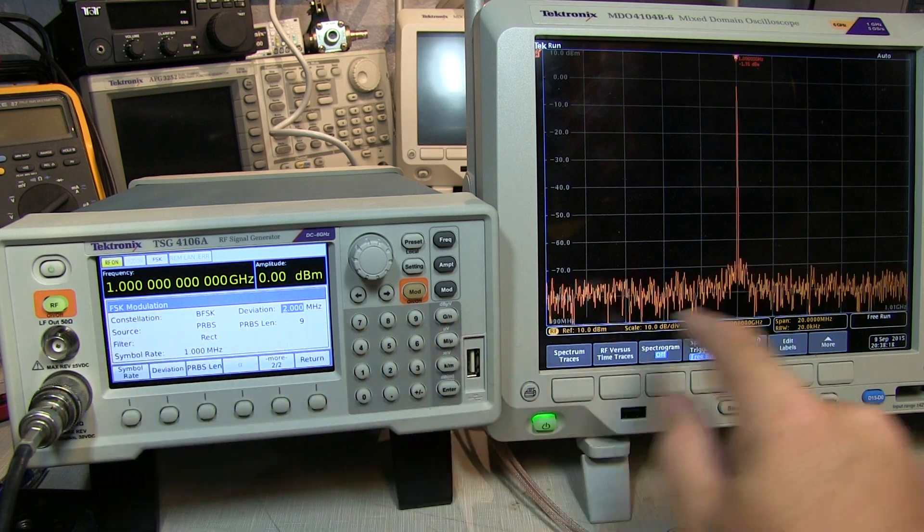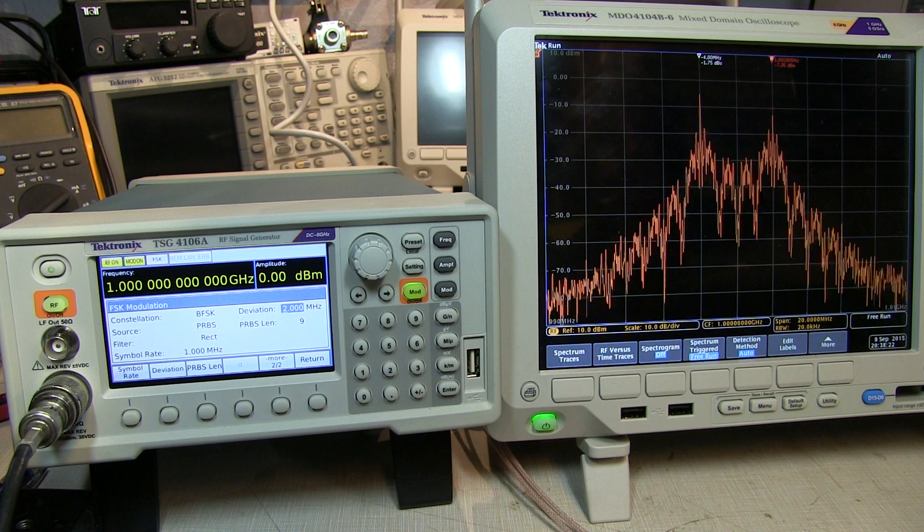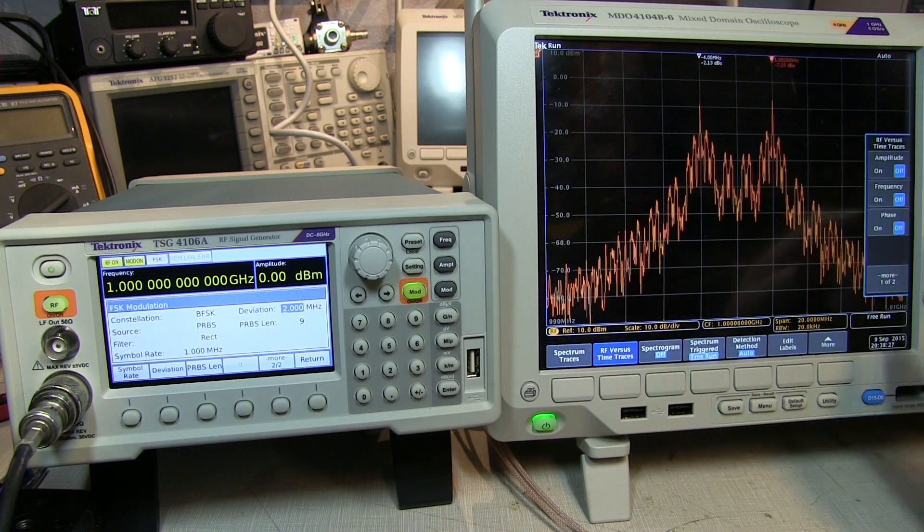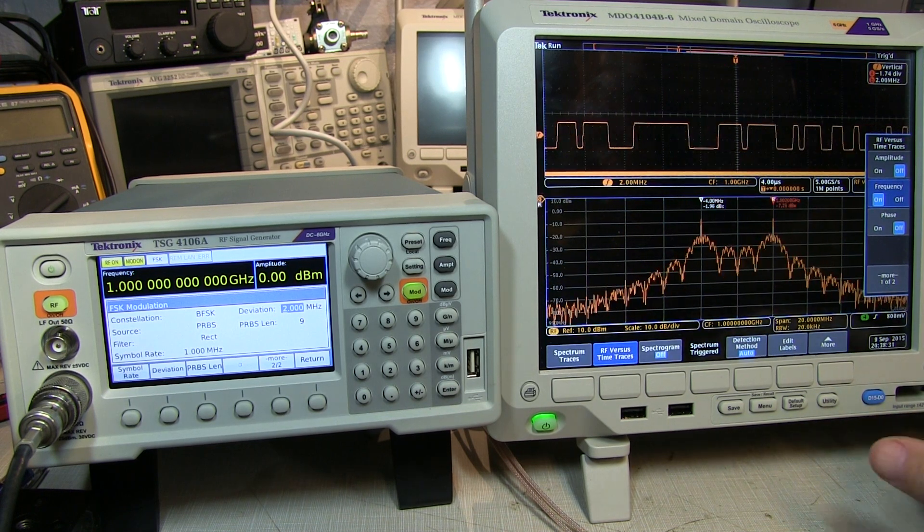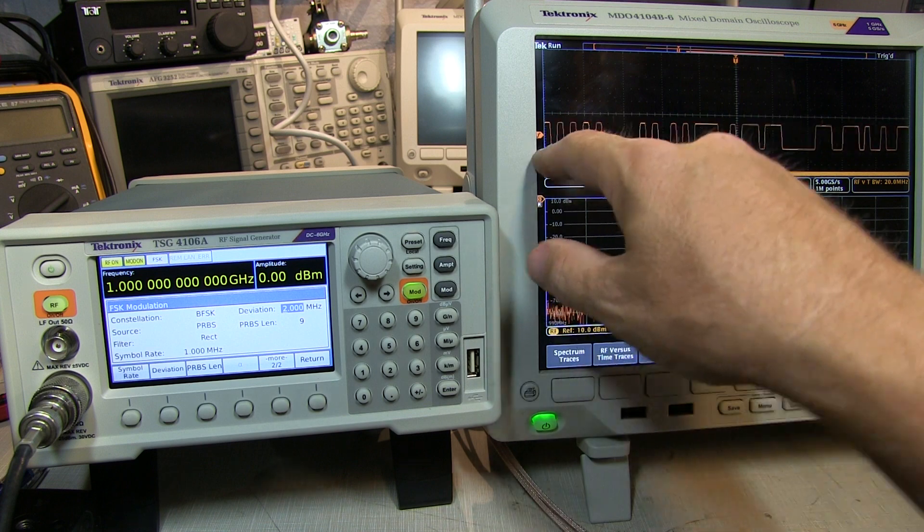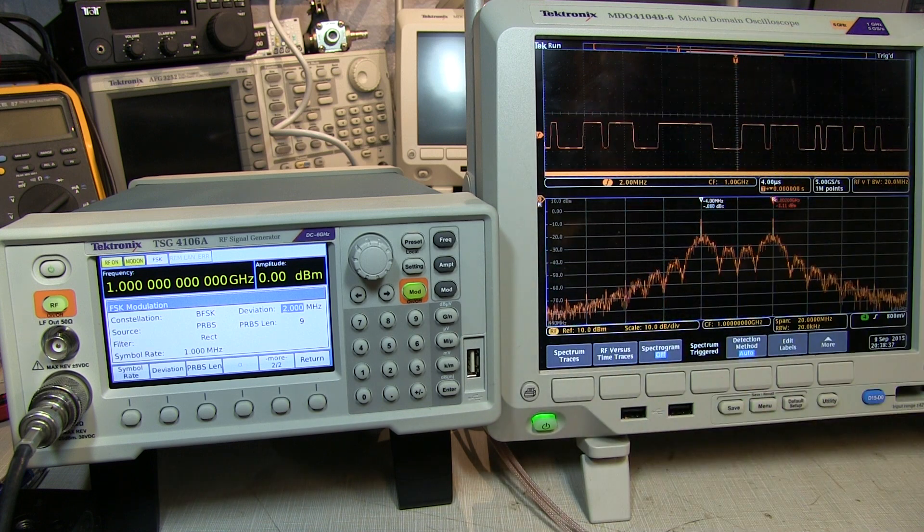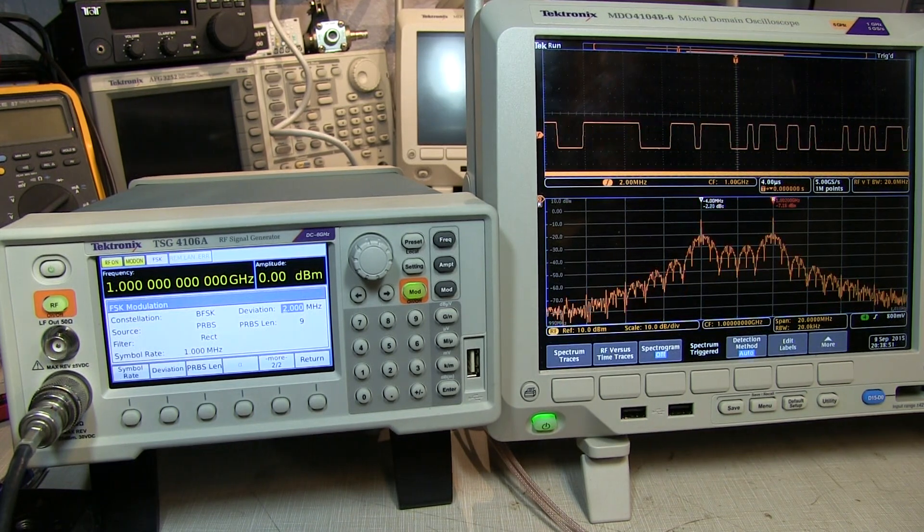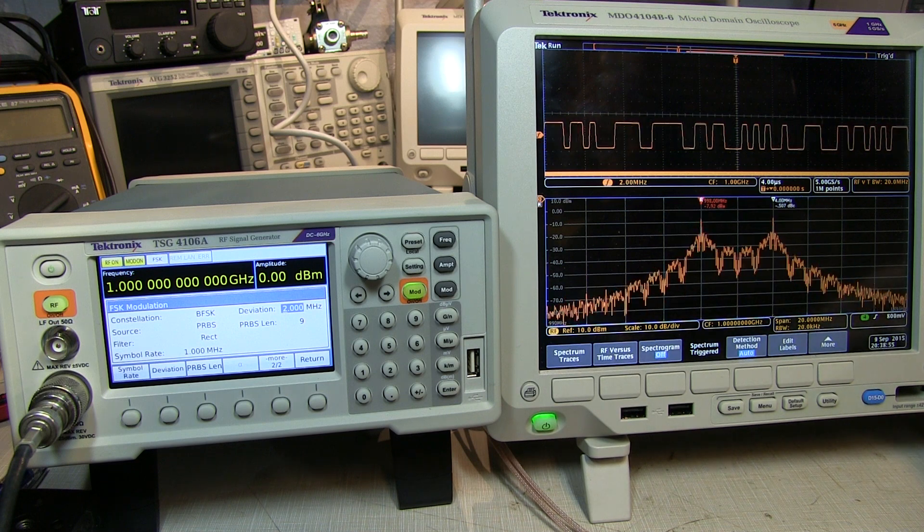Okay, so now we'll go from a single carrier here at one gigahertz, turn the modulation on, and we can actually see the spectrum. If we go to our RF versus time traces, turn on frequency deviation versus time, now we can literally see the frequency deviation versus time for that modulation.